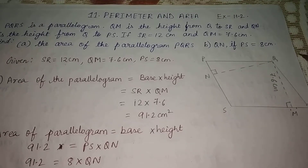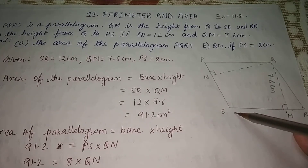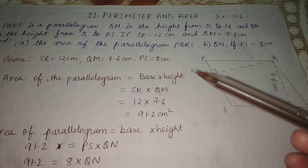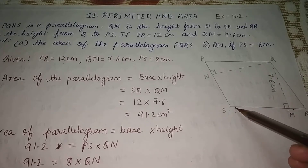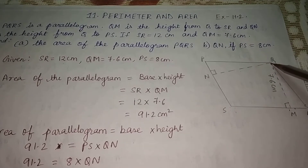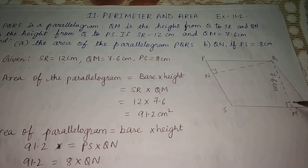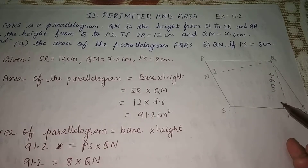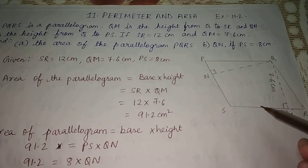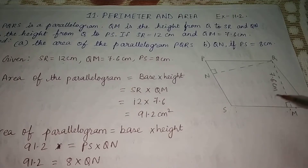We are also told to find the height QN if PS equals 8 cm. To find the area of parallelogram PQRS, we know area equals base times height. SR and QM are available — QM is drawn from a vertex and is perpendicular to the opposite side, so QM is the height. QM equals 7.6 cm and SR equals 12 cm.